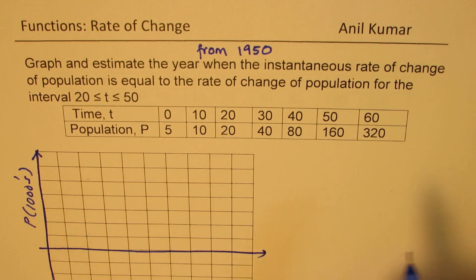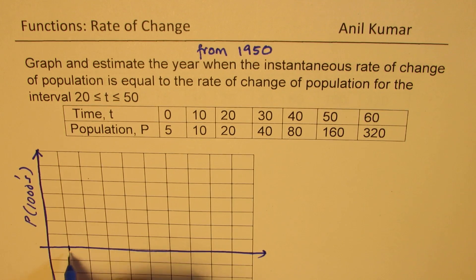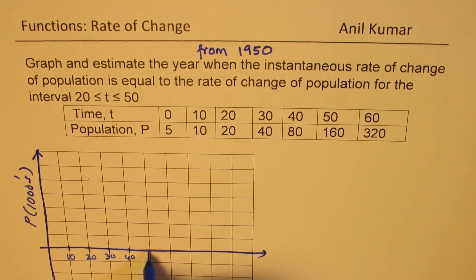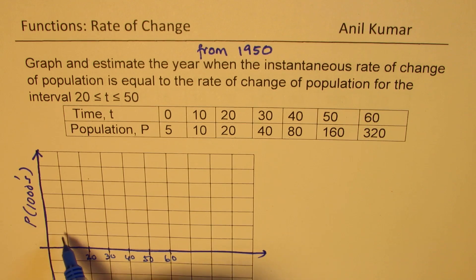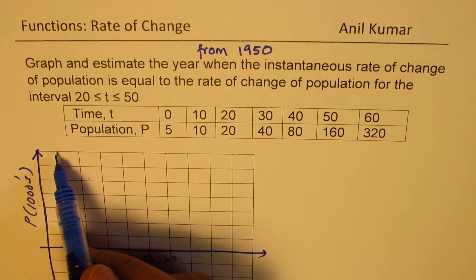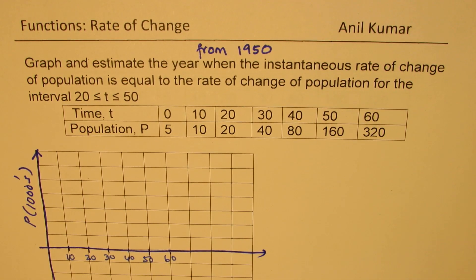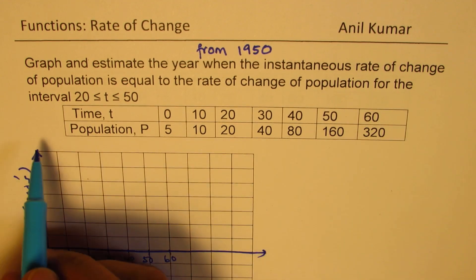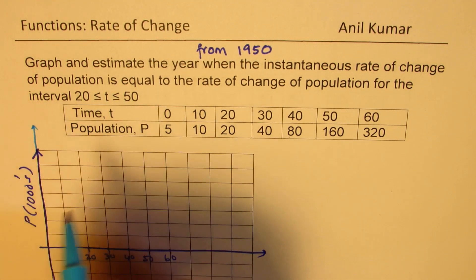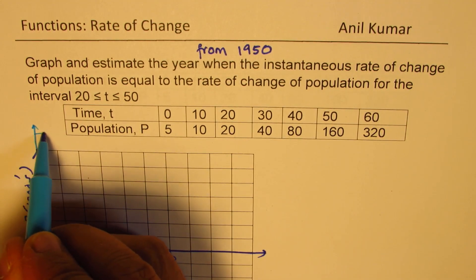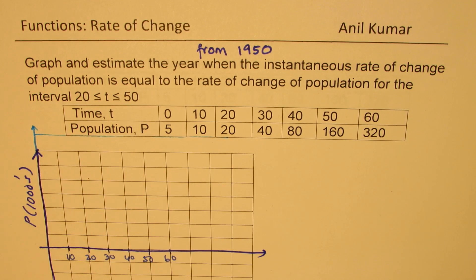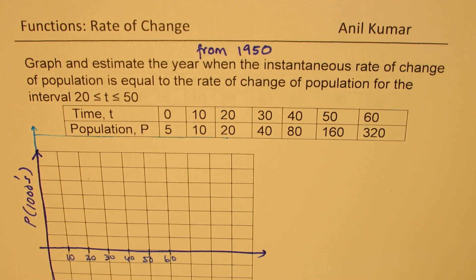On the time axis we mark 10, 20, 30, 40, 50, 60. On the population axis we need to go up to 320, so we mark 40, 80, 160, 240, 320. This will be a rough sketch but will give a fairly good idea about the function.